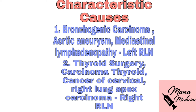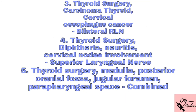Bronchogenic carcinoma, aortic aneurysm, and mediastinal lymphadenopathy are characteristically associated with paralysis of the left recurrent laryngeal nerve. Thyroid surgery (thyroidectomy), carcinoma of the thyroid, cancer of the cervical esophagus, and right lung apex carcinoma denote right recurrent laryngeal nerve paralysis. Thyroidectomy, carcinoma of thyroid, and cancer of the cervical esophagus are also causes of bilateral recurrent laryngeal nerve paralysis. Examiners frequently mention thyroidectomy in clinical scenarios to denote RLN paralysis.